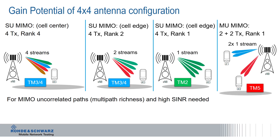Last but not least, we see also multi-user MIMO. Multi-user MIMO is using 2x2 MIMO for two users in parallel using the same resources. Multi-user MIMO is not really visible in today's mobile networks so far. It appears to be quite complex to find the right pairs of UEs because they need to have some decorrelation to each other.